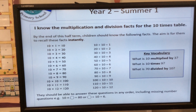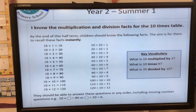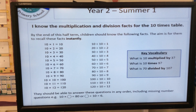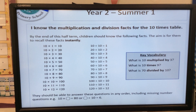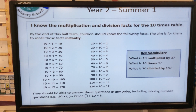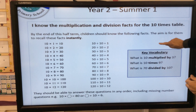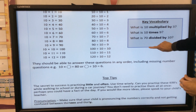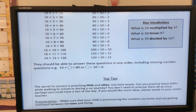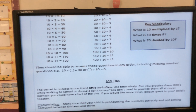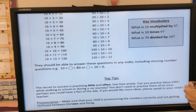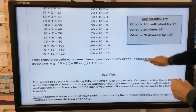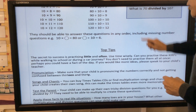The key vocabulary includes: 'What is 10 multiplied by 3?' — so 'multiplied by'; 'What is 10 times 9?' — so 'times'; and 'What is 70 divided by 10?' — so 'divided by.' They should be able to answer these sorts of questions in any order, including missing number questions. An example of that is: '10 times the missing number is equal to 80,' or 'something divided by 10 is equal to 6.'